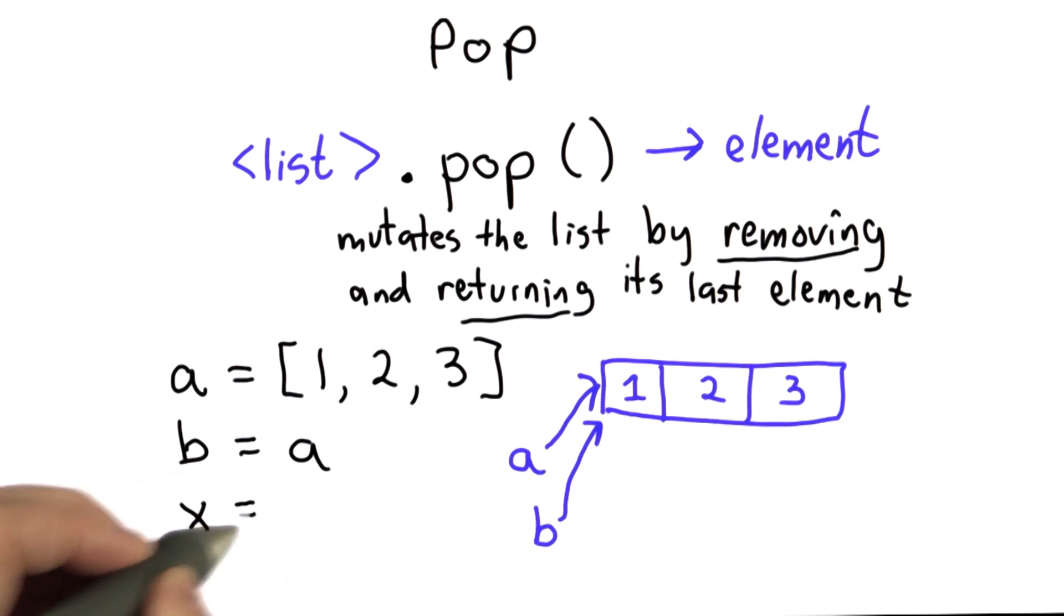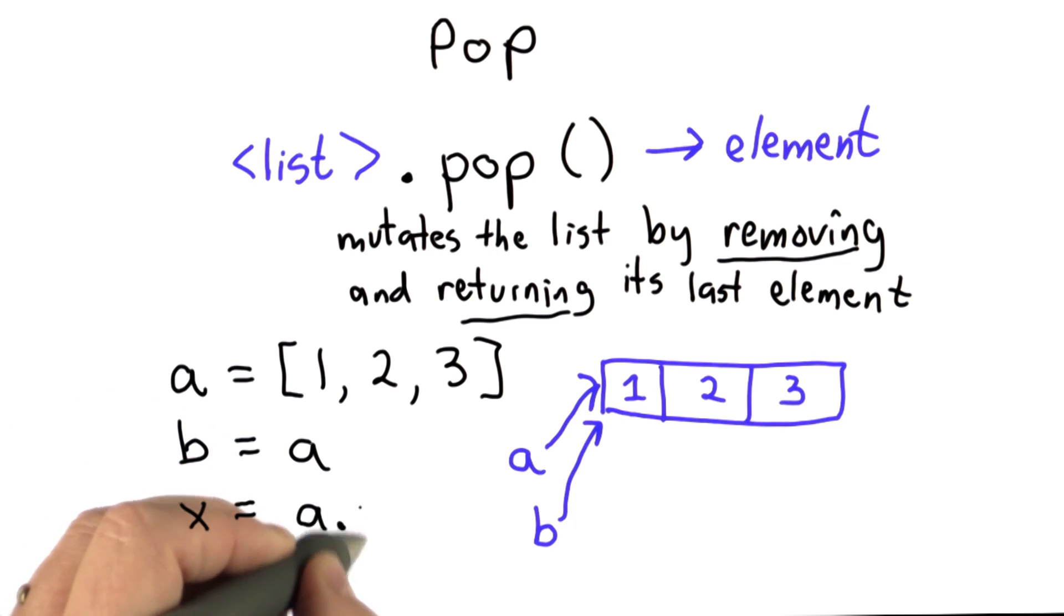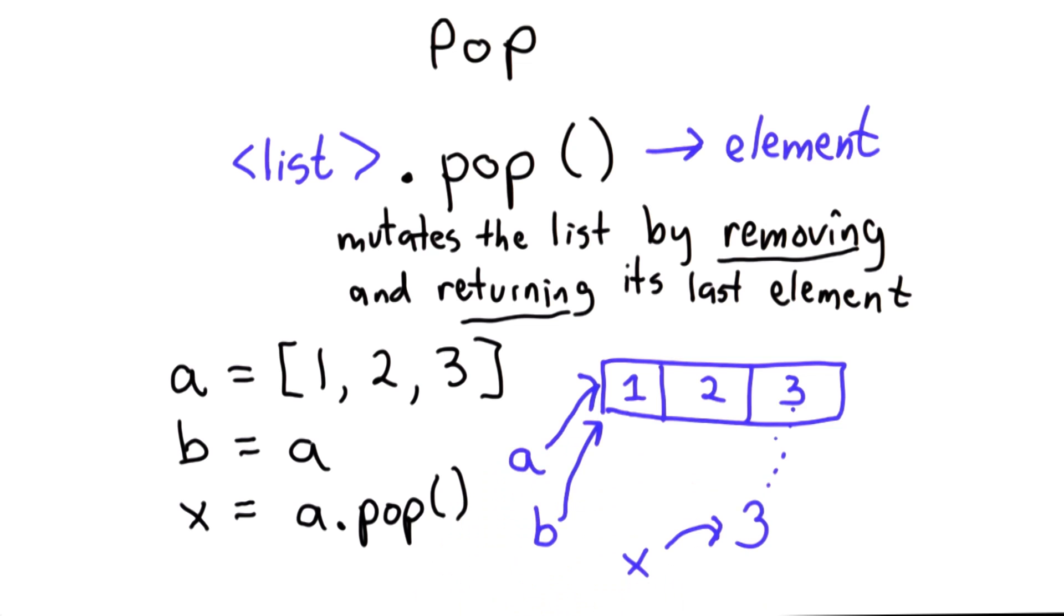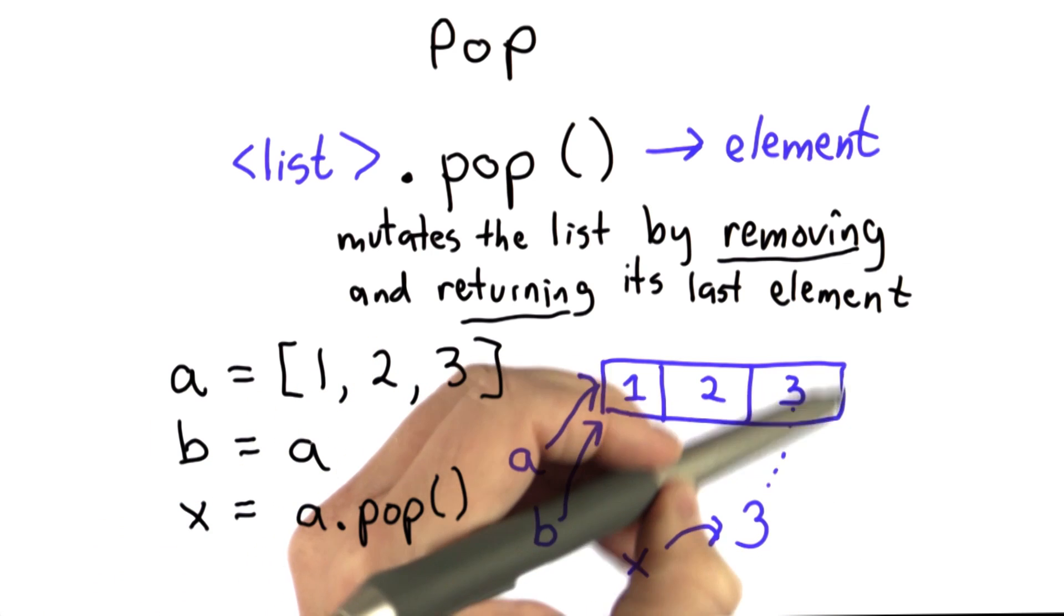Then we do x assign a.pop(). So the value of x will be 3. That's what the last element was. That's what we get returned by pop. But it also mutates the value of the list. It removes that element.